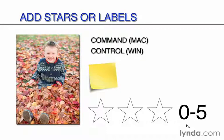We can also do the same thing with labels. Press Command on a Mac or Control on Windows, and then 6 through 9 to add or remove labels to our photographs. One of the reasons I wanted to pause before we actually begin and show you this shortcut is so that you write it down, because this is one of those shortcuts you just have to know if you want to get good at working with Adobe Bridge. If you can learn this shortcut, you can learn another one which isn't very different, and it will help you filter and find your images with more ease.